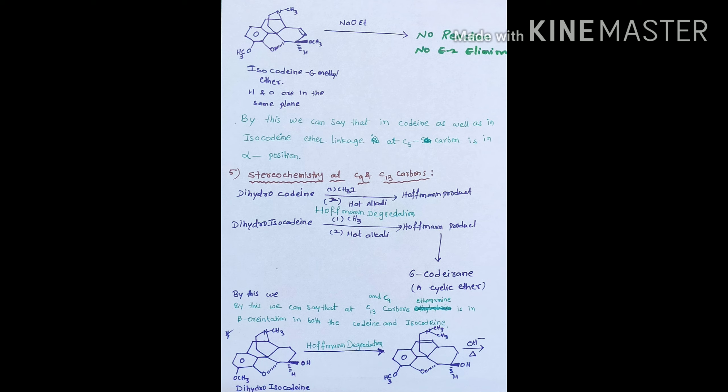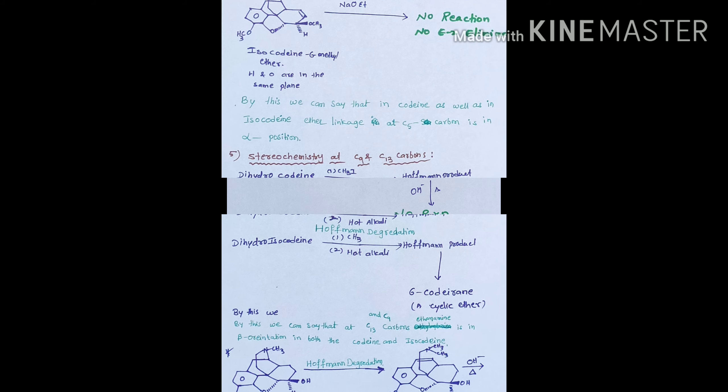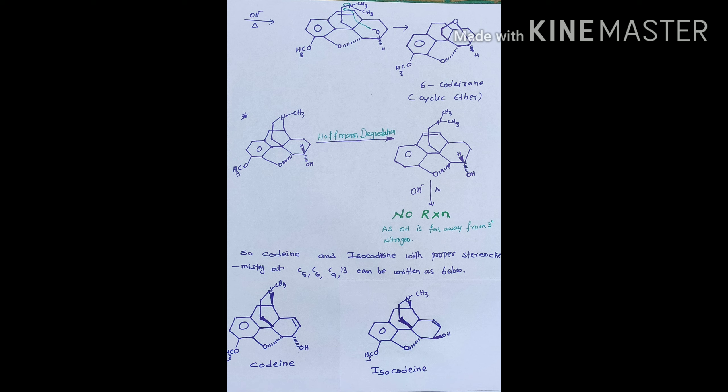As isocodine-6-methyl ether does not undergo elimination, we can say that in isocodine the C-O bond of the ether may lie in the alpha position.